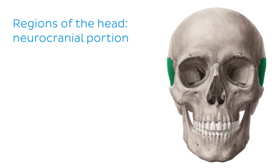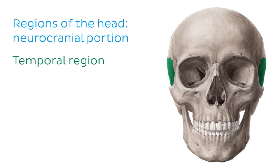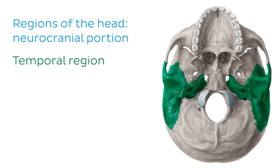The temporal region of the head is also located on either side of the head, but below the parietal region. This region overlies the temporal bones of the skull. If we flip the skull to view it from below, we can see the temporal bones a bit better and how they contribute to the zygomatic arches of the skull.